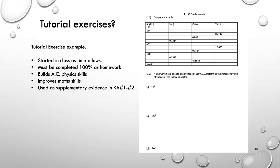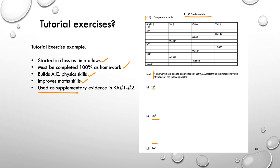Here's an example of one of the pages out of the exercise tutorial book. This one is the first lesson on AC fundamentals — complete the table. In this particular case, we're learning how to derive the angle of a sine, the cosine, the tan, and if you're given the cosine, how you work back to the angle. Then some sine wave instantaneous voltage calculations at different angles that they need to work out. The exercise tutorials follow that pattern, and there are 12 sets in the exercise tutorial book. We start them in class time as time allows; they must be completed 100% as homework. It builds their AC physics skills and improves their math skills — and very importantly, it will be used as supplementary evidence for knowledge assessments KA1 and KA2.